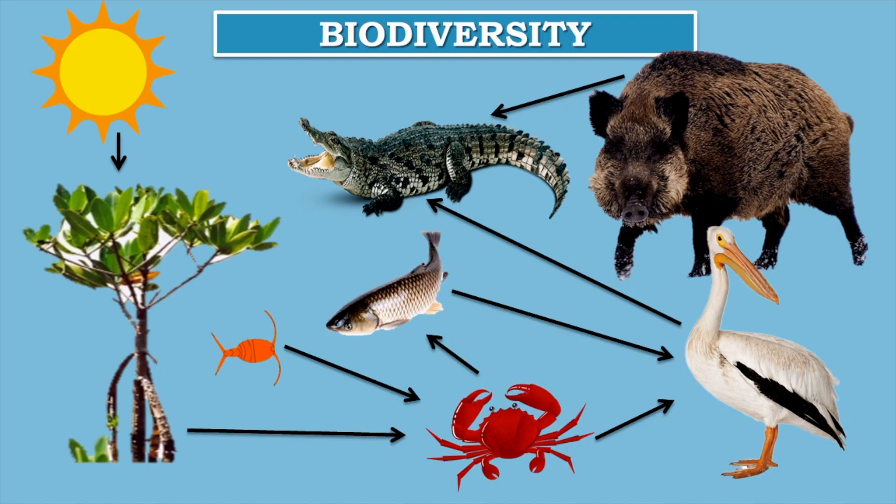This is how animals interact in this type of ecosystem. Can you identify the prey and the predator? How about the consumer and the producer?